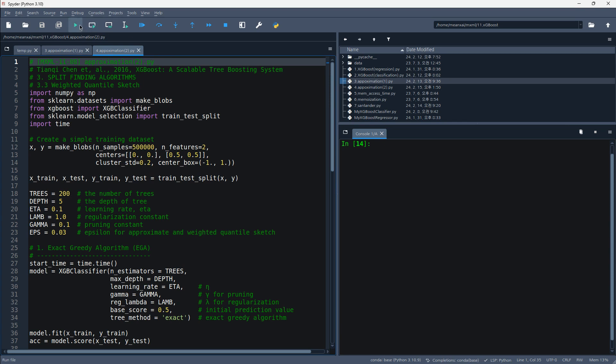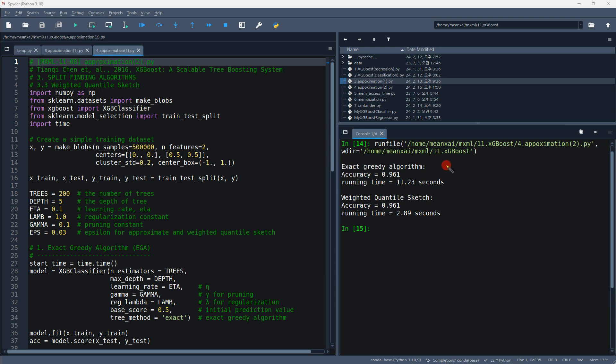Let's try to run this code. The code is now running. It will take about 9 to 10 seconds. The results came out like this. The accuracy of the exact greedy algorithm and the weighted quantile sketch algorithm is similar, but the execution time is significantly reduced.